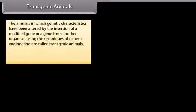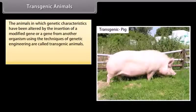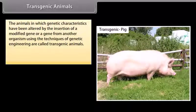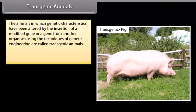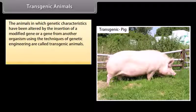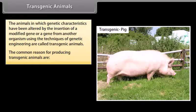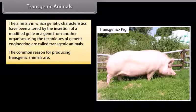Transgenic animals. The animals in which genetic characteristics have been altered by the insertion of a modified gene, or a gene from another organism, using the techniques of genetic engineering are called transgenic animals. The common reasons for producing transgenic animals are as follows.